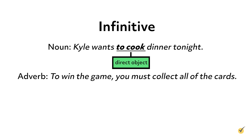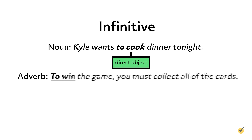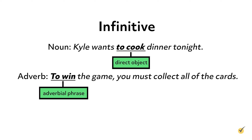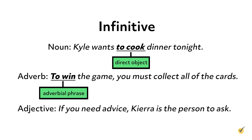Here's an example of an infinitive being used as an adverb: 'To win the game, you must collect all of the cards.' The infinitive 'to win' is being used as part of an adverbial phrase that tells us why all of the cards must be collected. Here's one more example: 'If you need advice, Kiera is the person to ask.' In this case, the infinitive 'to ask' is being used as an adjective to describe 'person,' telling us which person Kiera is.